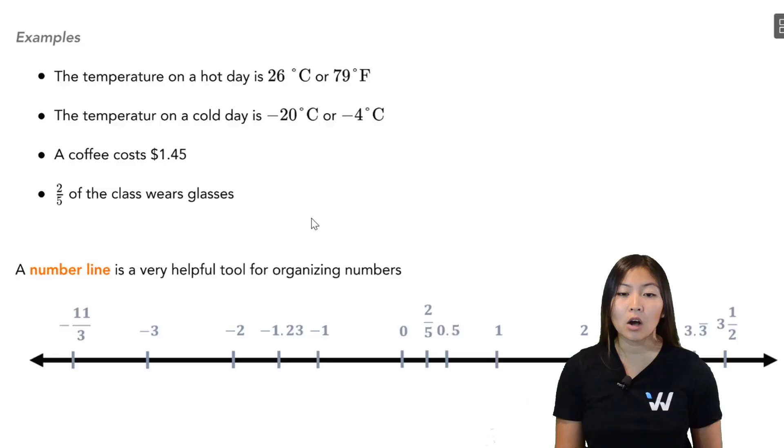So first, we have temperature. On a hot day, temperatures are represented by positive numbers, positive integers, such as 26 degrees Celsius or the equivalent 79 degrees Fahrenheit. Now on a cold day, we need to use negative numbers or negative integers to represent really cold temperatures, brutal temperatures.